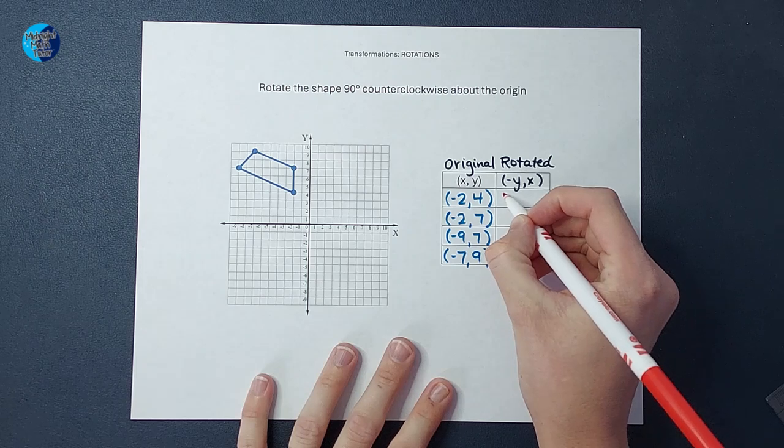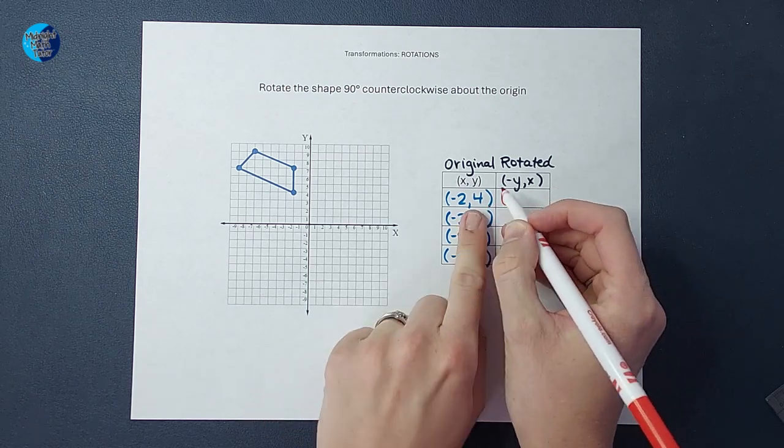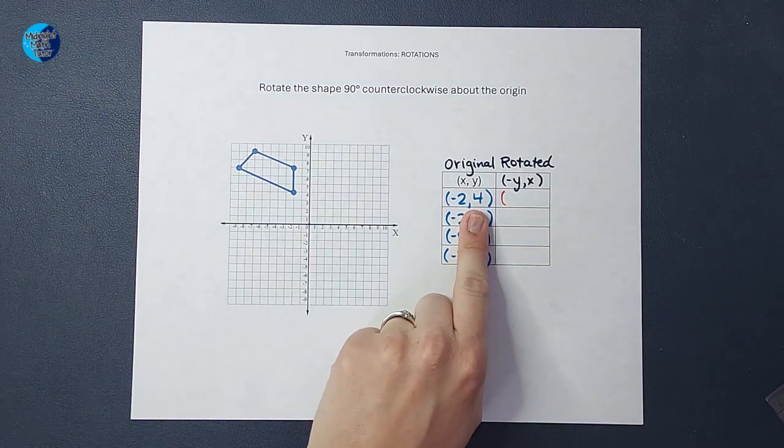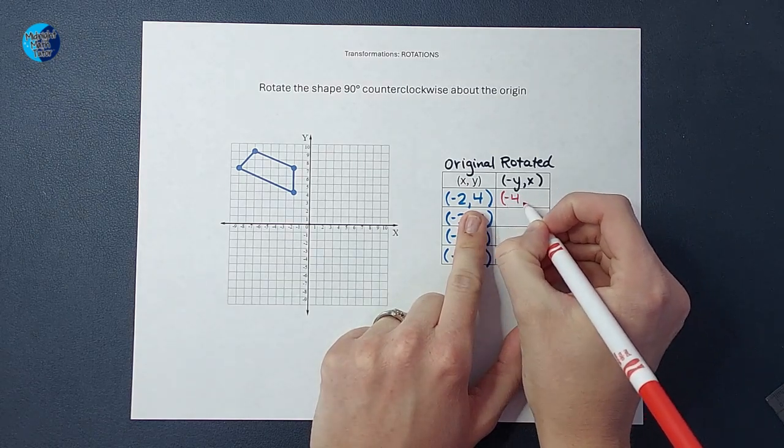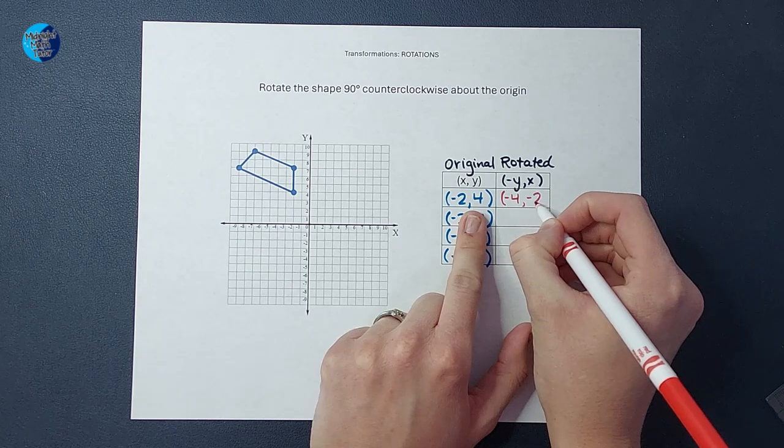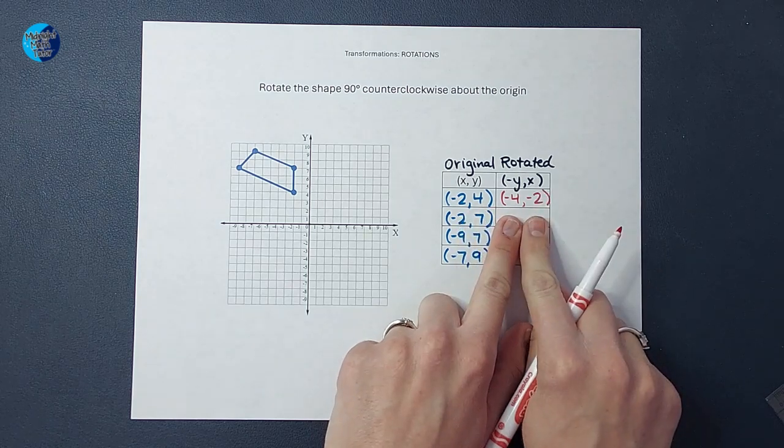So I am going to write the y first and change its sign. So since this is a positive 4, I'm going to make it a negative 4, and then I'm going to write the x second. And that is my new ordered pair.